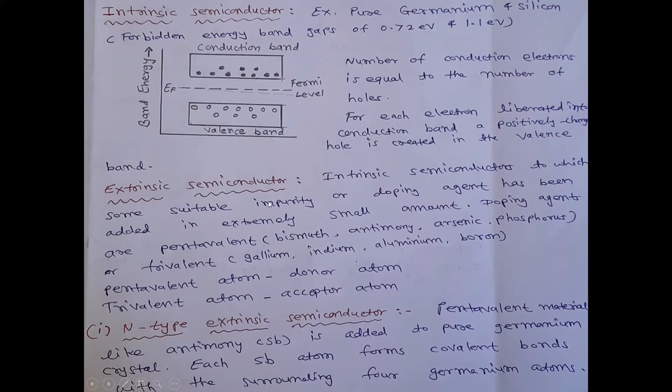Now, extrinsic semiconductor. It is intrinsic semiconductor to which some suitable impurity or doping agent has been added in a small amount. So, we can add doping agents like pentavalent impurities, trivalent impurities to this intrinsic semiconductor. And it is called extrinsic semiconductor. Now friends, pentavalent impurities are bismuth, antimony, arsenic, phosphorus. And trivalent impurities are gallium, indium, aluminium and boron. So, this pentavalent atom is called donor atom. Trivalent atom is called acceptor atom.